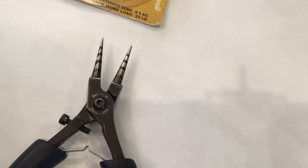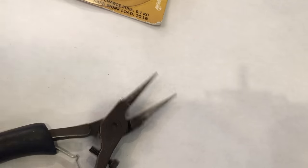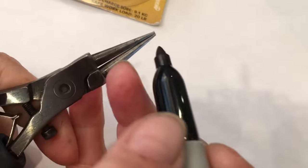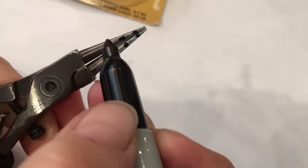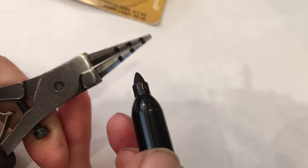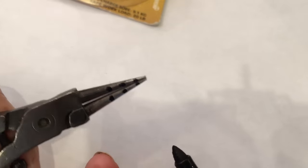One of the tricks for creating repeatable bends or loops is to mark your pliers. So this can be done easily by squeezing them together, determining where your diameter of your circle is, and you can draw one line or you can draw many depending on how many different sized openings you're going to be creating.